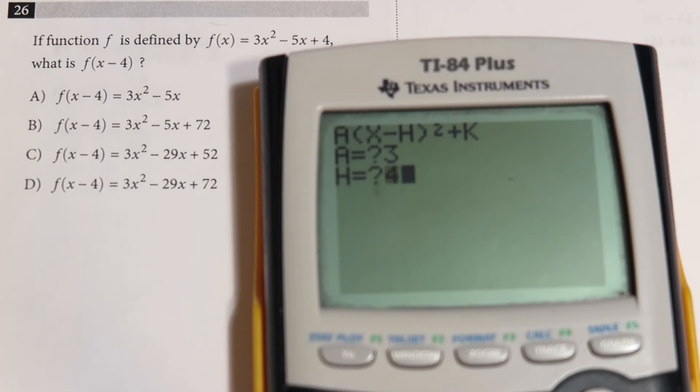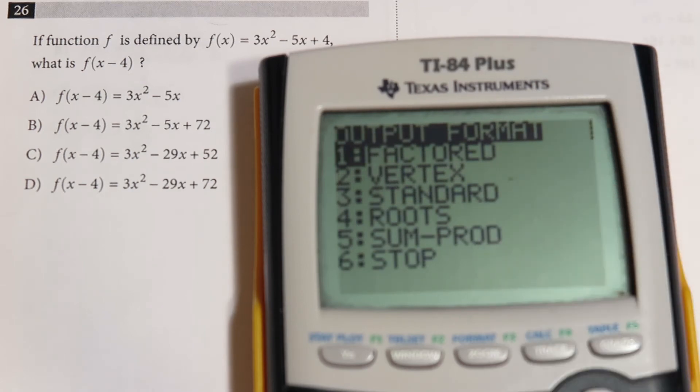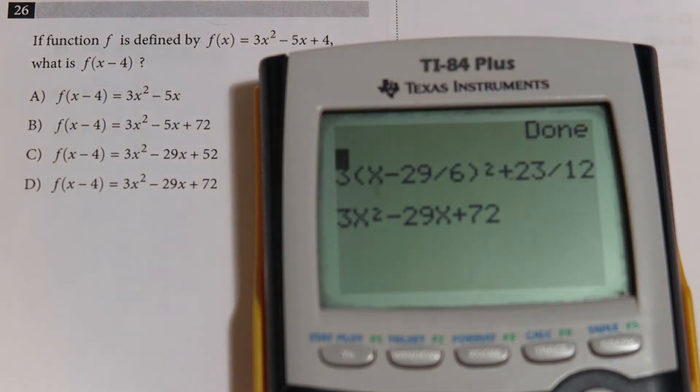The vertex is going to be 4, since we're shifting it 4 to the right, plus 5/6—5 divided by 6. The y value is still the same, so it's 23 divided by 12. Then I'm going to put it back in standard form. I choose option 3, and it's doing its magic, and it's done.